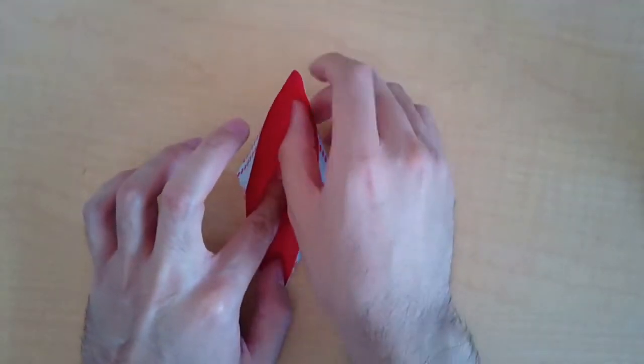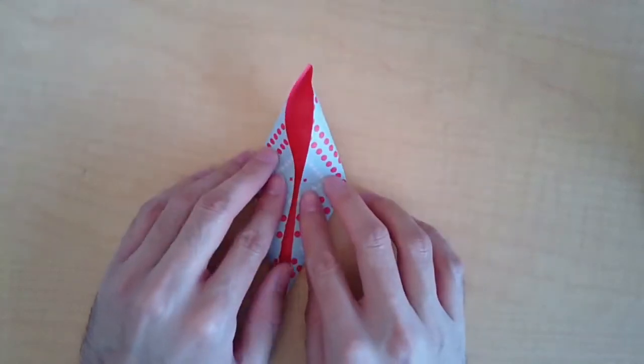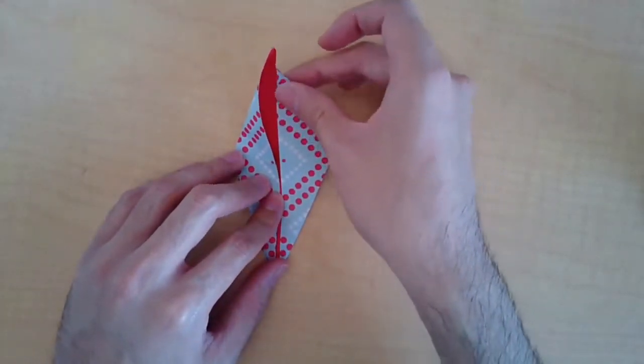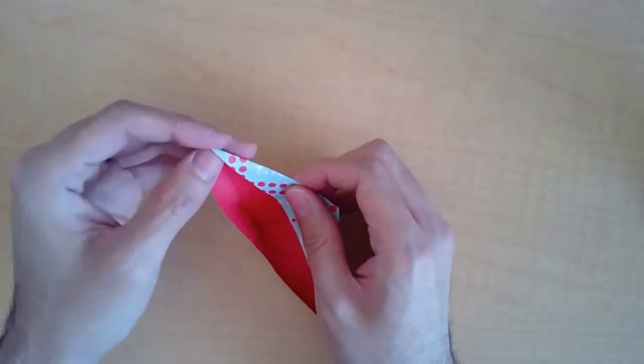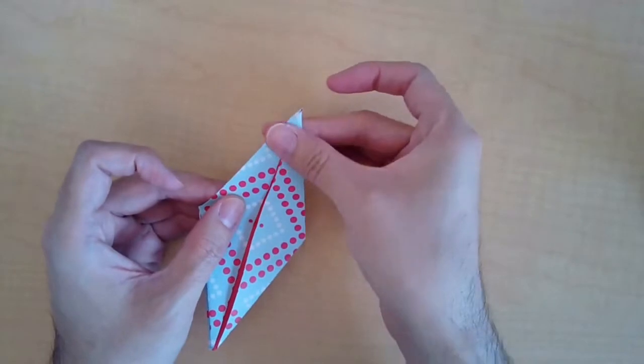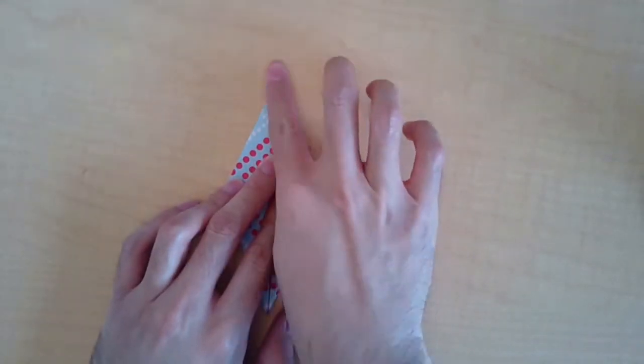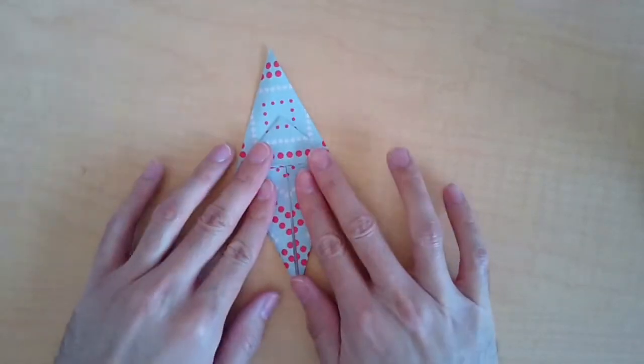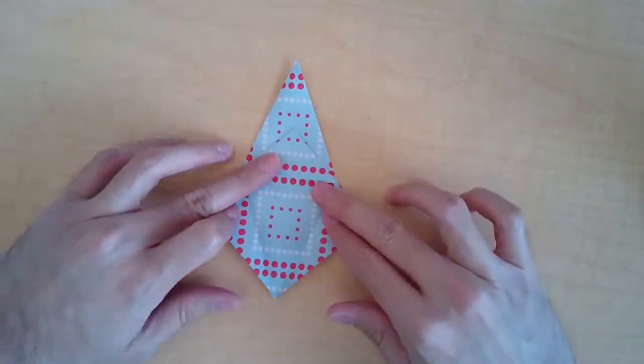You're going to slowly pull it upwards and then you're going to squash it down. Then you're going to use the creases that you made from the previous folds again to guide these folds. And again you're going to turn it over, open it up again.